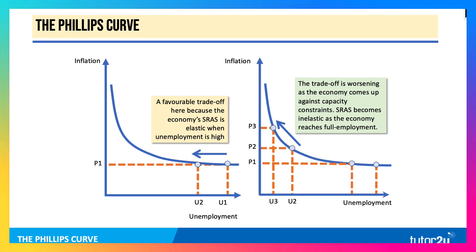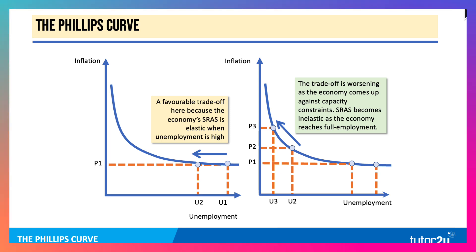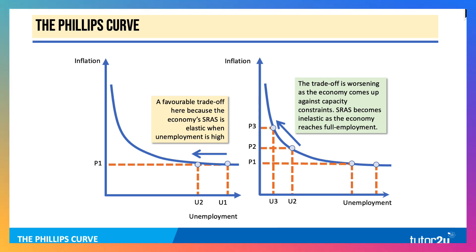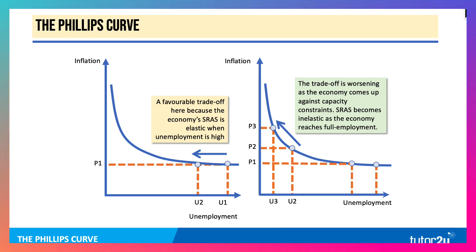However, the trade-off worsens as we move up the Phillips Curve and the economy comes up against capacity constraints. Once aggregate supply becomes inelastic, further falls in unemployment — for example, from U2 to U3 — can cause an acceleration in inflation. So the trade-off can worsen as the Phillips Curve becomes inelastic.